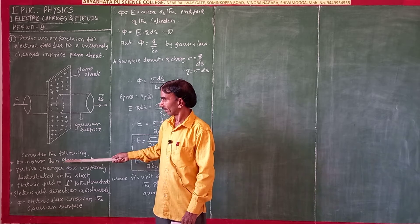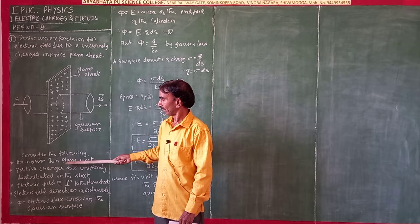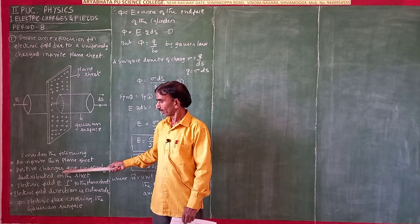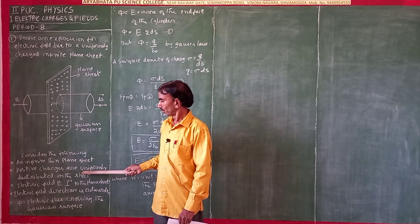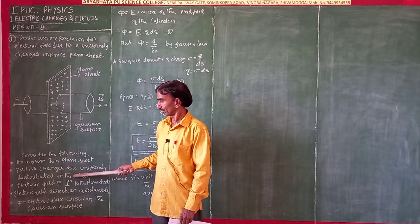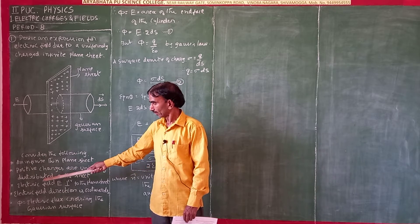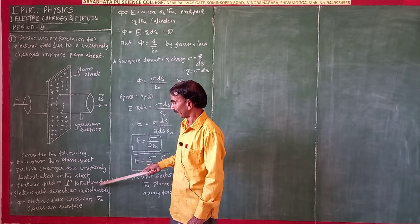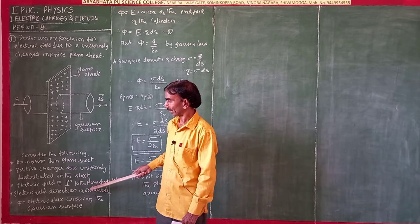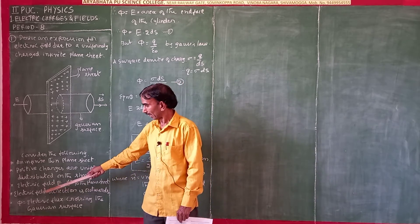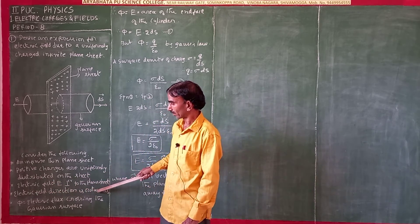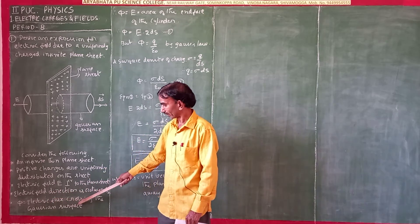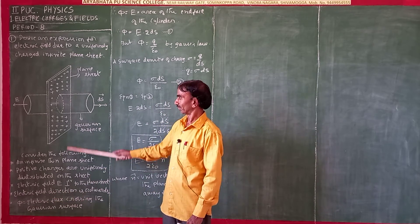An infinite plane sheet — electric field E is perpendicular to the plane sheet. Electric field direction E is outwards. Phi is equal to electric flux crossing the Gaussian surface.